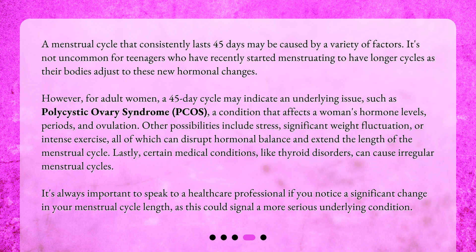Why would a menstrual cycle be 45 days? A menstrual cycle that consistently lasts 45 days may be caused by a variety of factors. It's not uncommon for teenagers who have recently started menstruating to have longer cycles as their bodies adjust to new hormonal changes. However, for adult women, a 45-day cycle may indicate an underlying issue such as polycystic ovary syndrome (PCOS), a condition that affects a woman's hormone levels, periods, and ovulation. Other possibilities include stress, significant weight fluctuation, or intense exercise, all of which can disrupt hormonal balance and extend the length of the menstrual cycle.